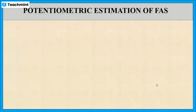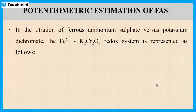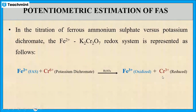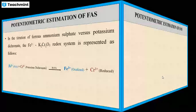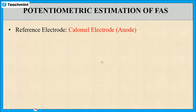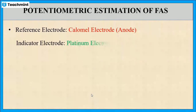Now, let us see the potentiometric estimation of FAS. The titration of FAS versus potassium dichromate is as follows: Fe²⁺ in FAS gets oxidized to Fe³⁺, and Cr⁶⁺ of potassium dichromate gets reduced to Cr³⁺. In this system, we are using two electrodes — calomel electrode as the reference electrode, which acts as anode, and platinum electrode as the indicator electrode, which acts as cathode.